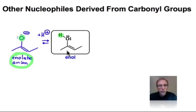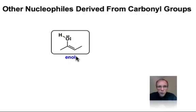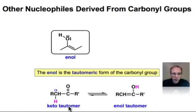This is a neutral nucleophilic form of a carbonyl group. This neutral enol species is present any time we have a carbonyl derivative that has an alpha carbon that's sp3 hybridized and which has a hydrogen atom on that alpha position.